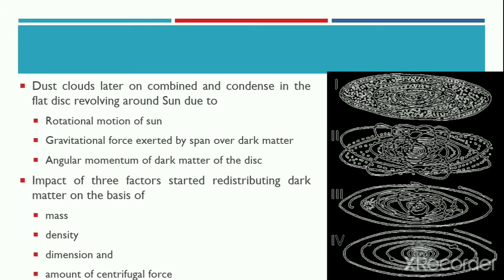These dust particles later combined, condensed into a flat disk, and started revolving around the Sun due to three major factors. The first factor is the rotational motion of the Sun. The second is the gravitational force exerted by the Sun over the dark matter, and the third is the angular momentum of the dark matter of the disk.